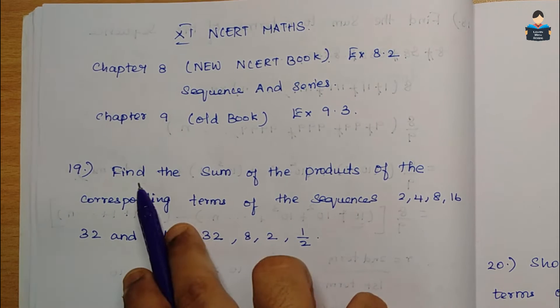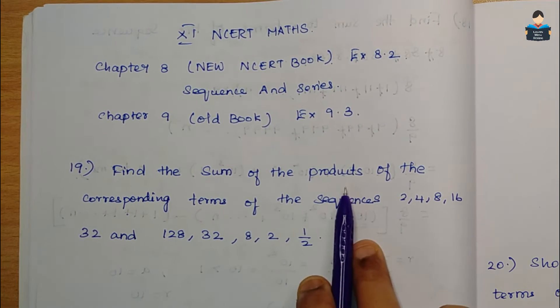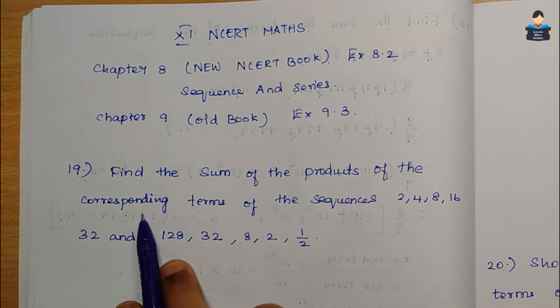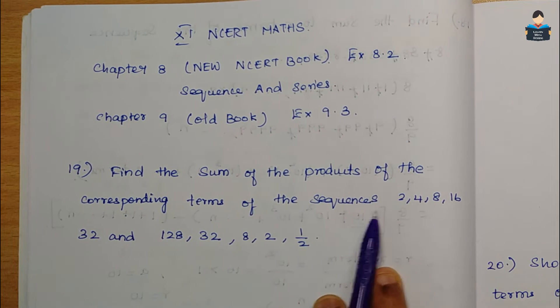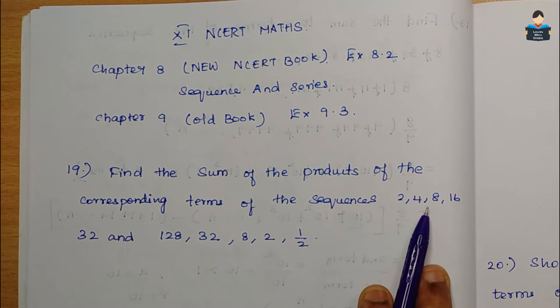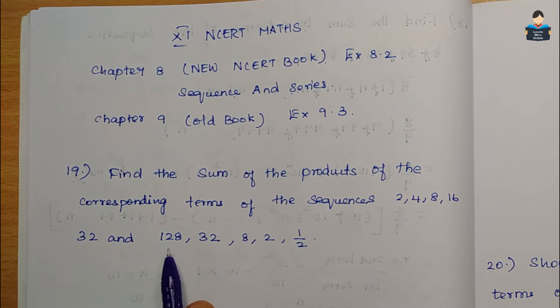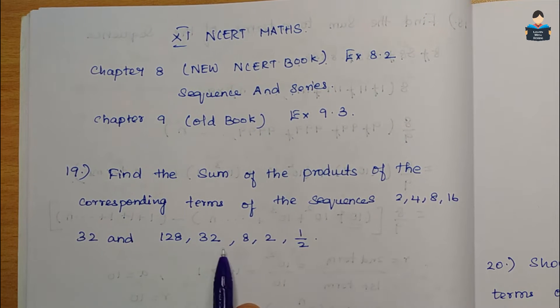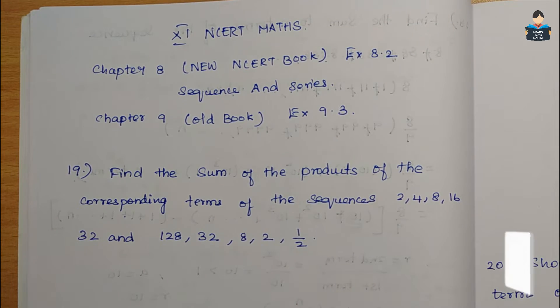Question 19: Find the sum of the products of the corresponding terms of the sequences 2, 4, 8, 16, 32 and 128, 32, 8, 2, 1/2.